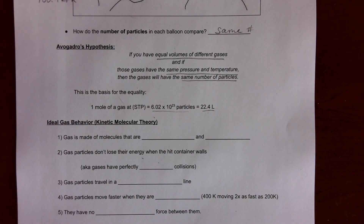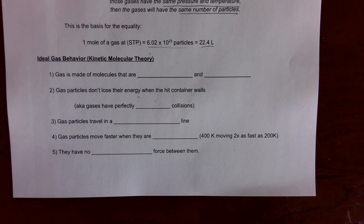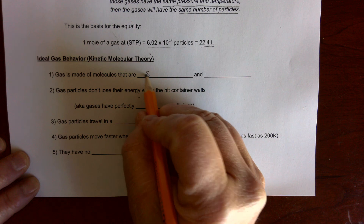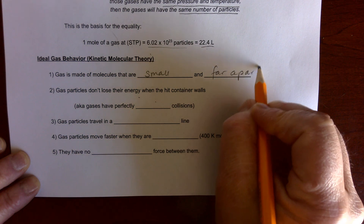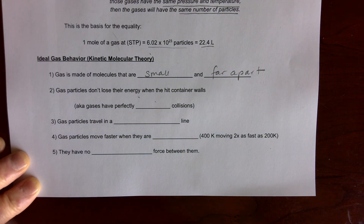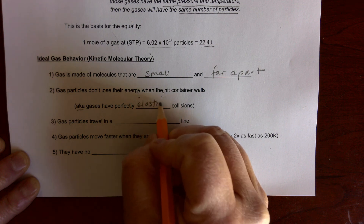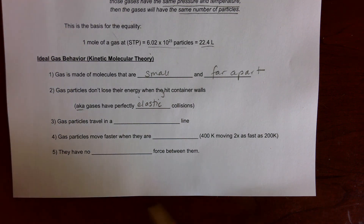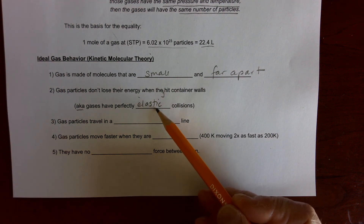Let's talk about ideal gases and how they behave. We're going to explain ideal gas behavior based on how those molecules are moving and interacting. The kinetic molecular theory says that gases are made up of molecules that are very small and very far apart. It also says that gas particles don't lose their energy when they hit the container walls — meaning gases have perfectly elastic collisions. This is different from large-scale collisions; billiard balls on a pool table slow down, but on the molecular level, gas particles have elastic collisions.